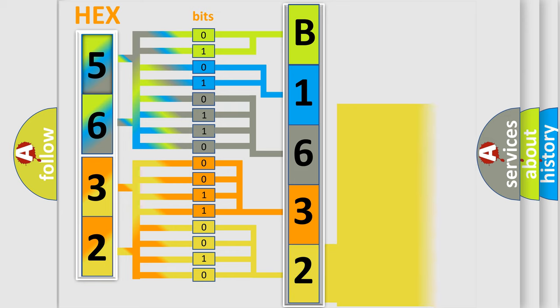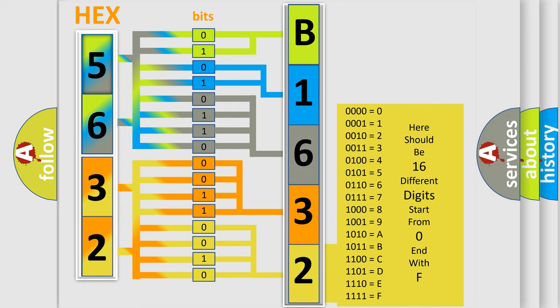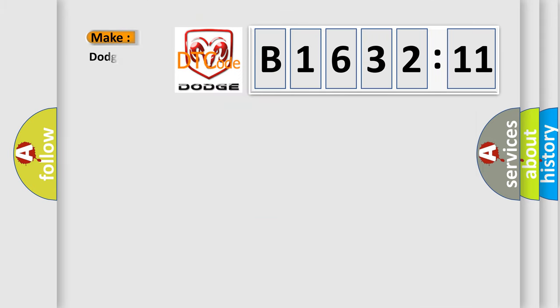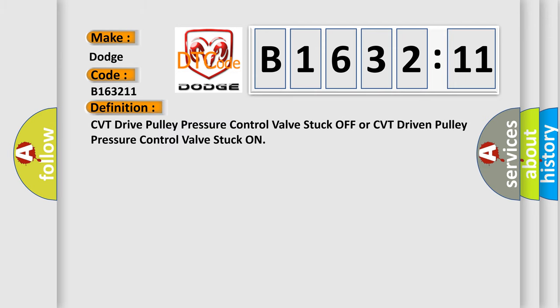A single byte conceals 256 possible combinations. We now know in what way the diagnostic tool translates the received information into a more comprehensible format. The number itself does not make sense to us if we cannot assign information about it to what it actually expresses. So, what does the diagnostic trouble code B163211 interpret specifically for Dodge car manufacturers?